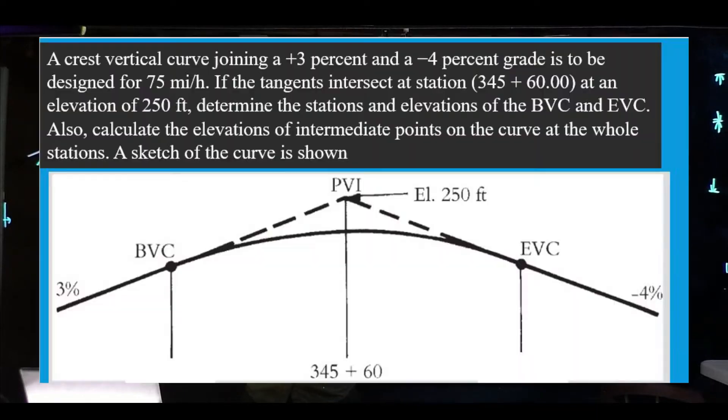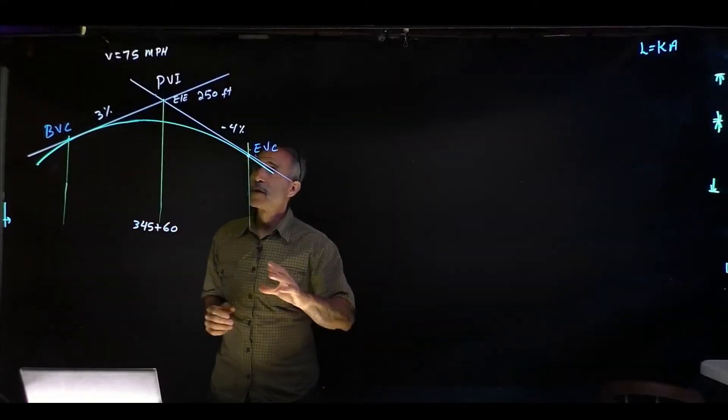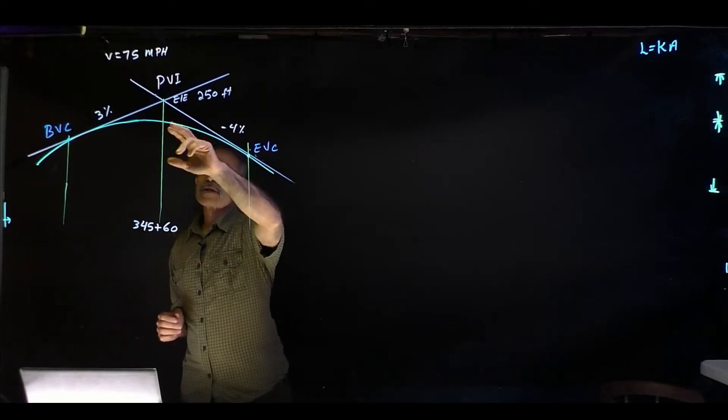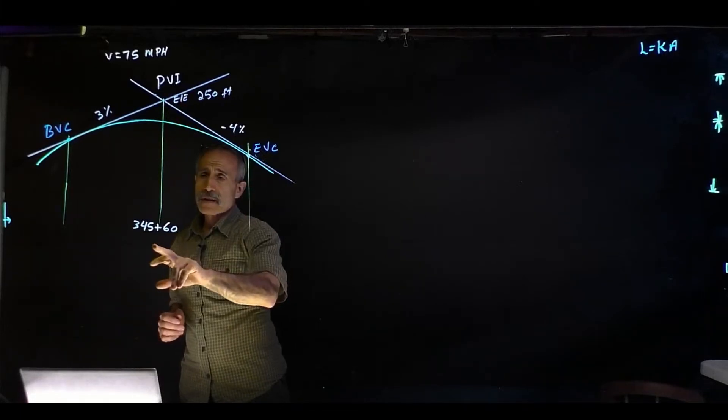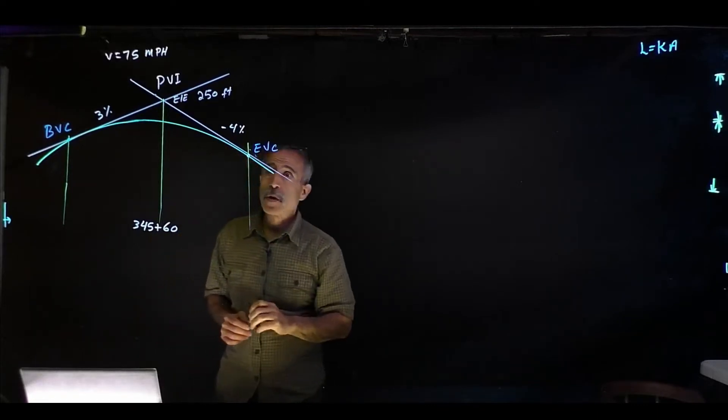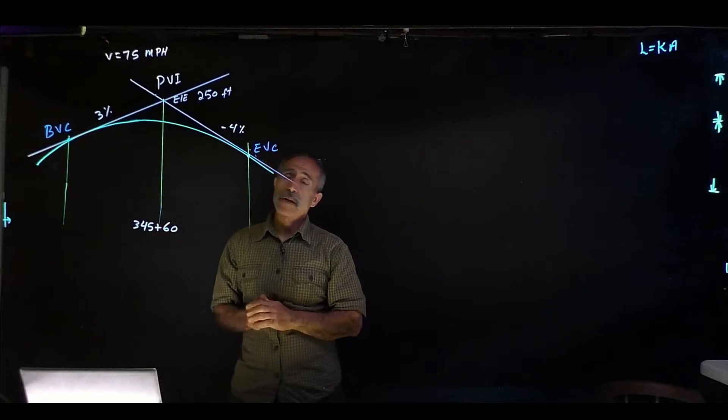We have this vertical curve that is intersected by 3% going up and 4% going down. The only information we have here is where two tangents intersect at the point of intersection. We have an elevation of 250 and it is at station 345+60. And we're going to design it for a 75 mile an hour curve.